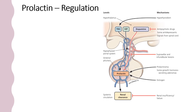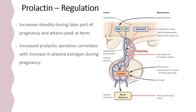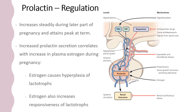Regulation of prolactin secretion: prolactin secretion increases steadily during the later part of pregnancy and attains a peak at term. The increased prolactin secretion correlates with the increase in plasma estrogen concentration during pregnancy. Estrogen causes hyperplasia of the lactotrophs in the anterior pituitary. Though it does not directly stimulate prolactin synthesis, estrogen also increases the responsiveness of the lactotrophs to other stimuli that increase prolactin synthesis and secretion.